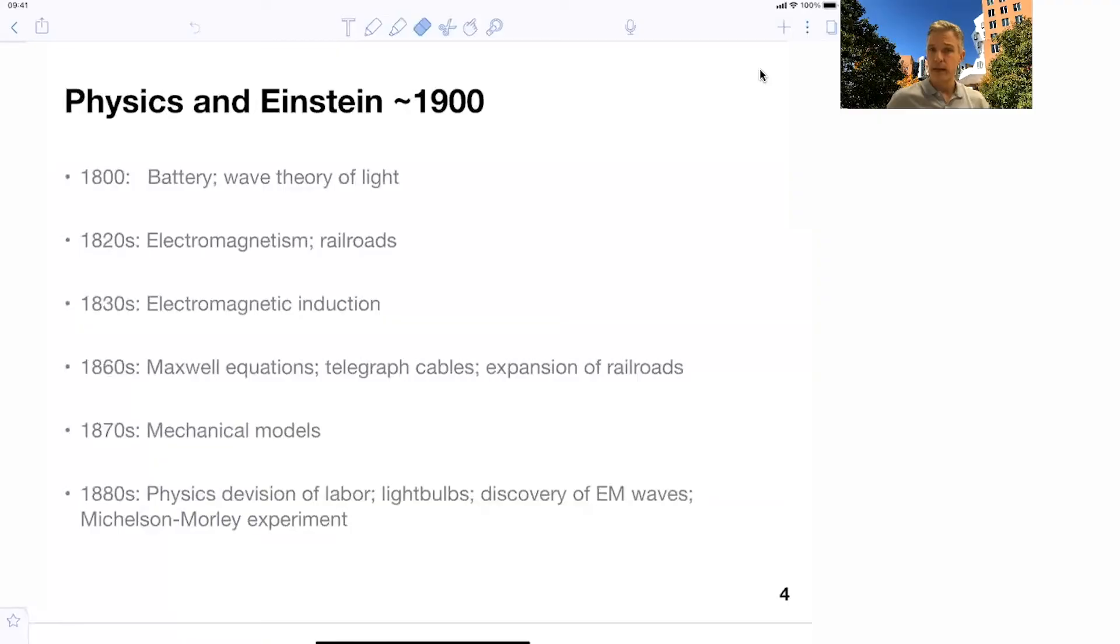On the theory of light, people developed all kinds of ideas and conflicting ideas. For example, mechanical models of light, which relied on the existence of a medium in which light travels. And we'll discuss this at length.